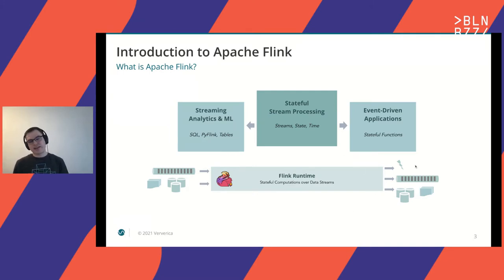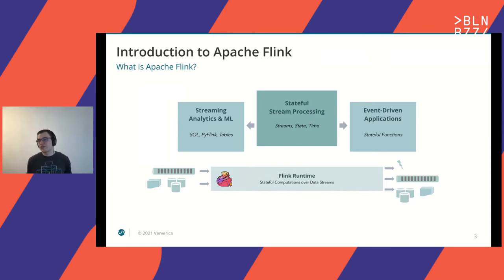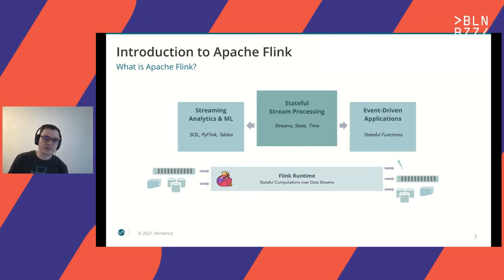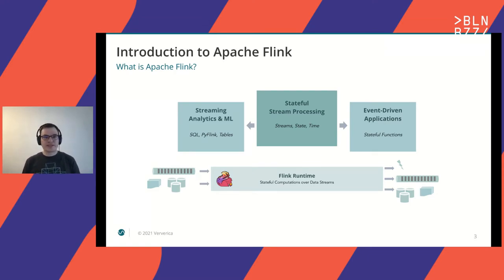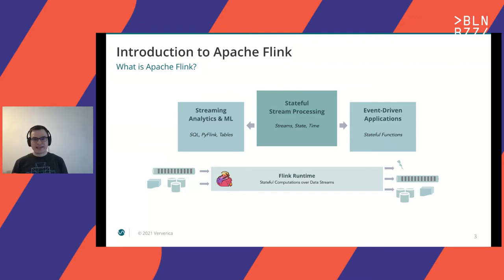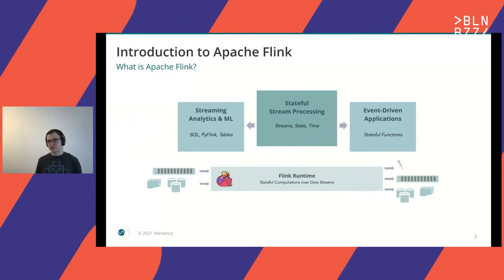Flink supports three main categories of use cases. The most prominent is stateful stream processing, where we provide basic primitives like streams, state, and time to the user. We also provide higher level abstractions for streaming analytics and machine learning — the most prominent being the SQL interface, so you can write standard SQL on both batch and streaming workloads and it will execute in a distributed manner on the Flink cluster. The latest addition is event-driven applications through the stateful functions API, which is basically like an actor model on top of Flink, allowing you to send messages back and forth in a much more generic way — more about general purpose application development, like you would do with Spring or other frameworks.